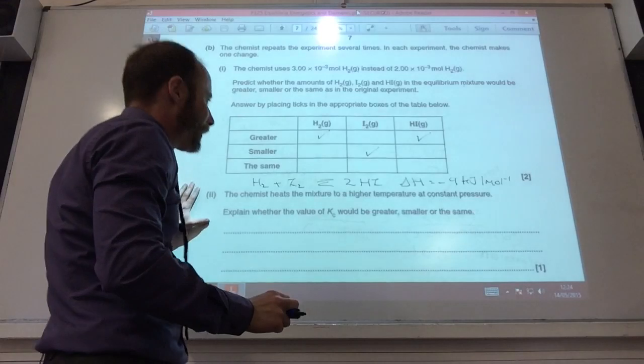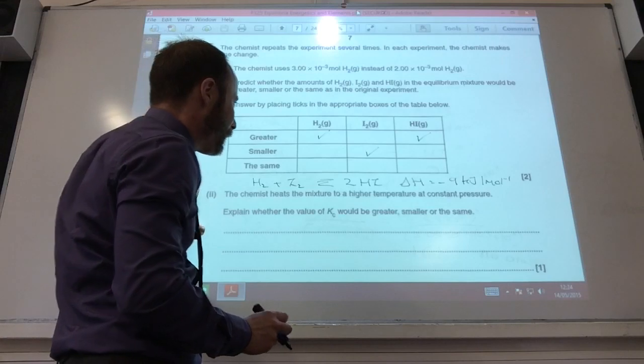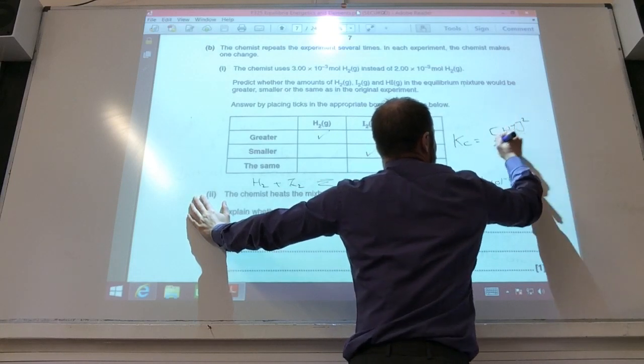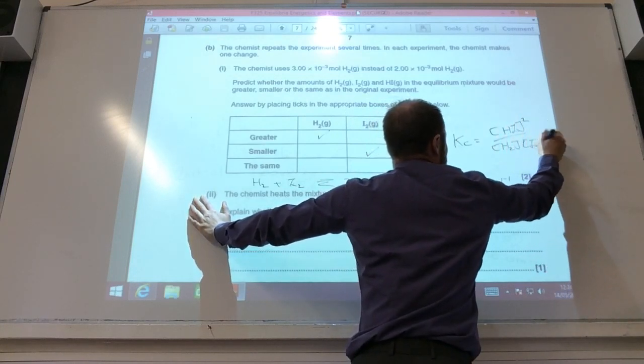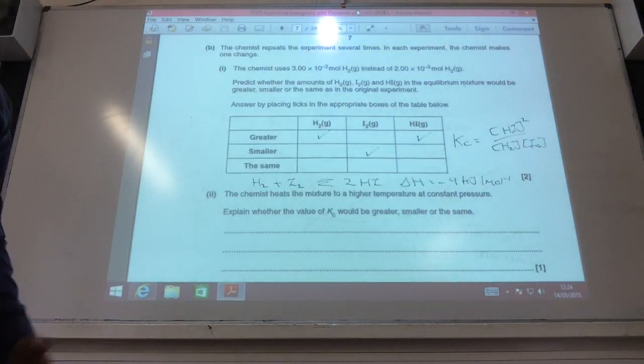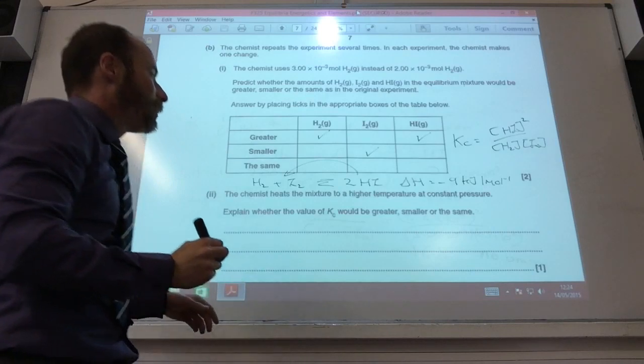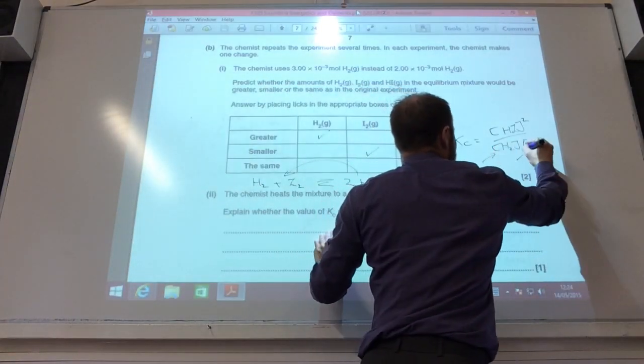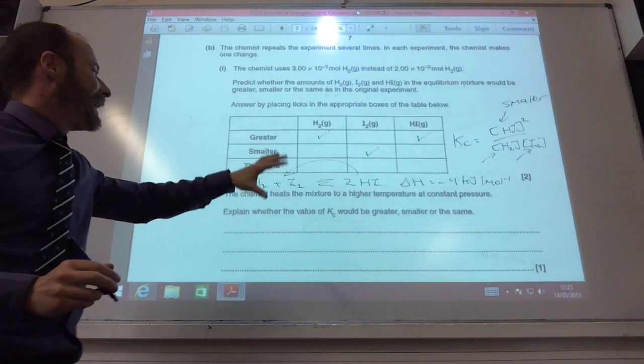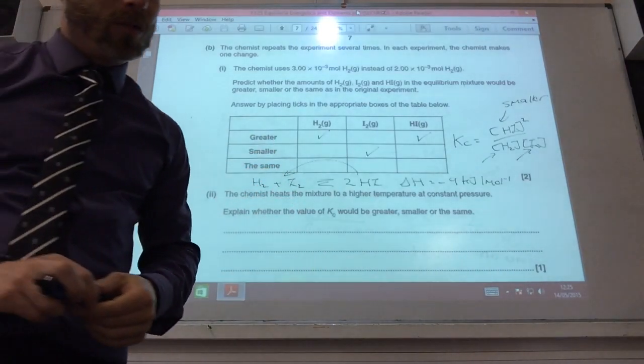So, the chemist heats the mixture at constant pressure. What will happen to Kc? Will it be greater, smaller, or the same? Well, remember, Kc is going to be HI squared over H2I2. It is an exothermic reaction, so that means that it's going to shift to the left-hand side through Le Chatelier's principle. That means that these terms will get bigger and that term will get smaller. Therefore, Kc will be smaller because the equilibrium will shift to the left-hand side to produce more of the reactants.